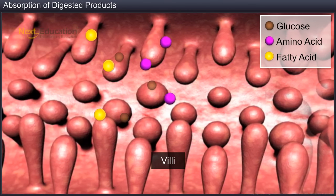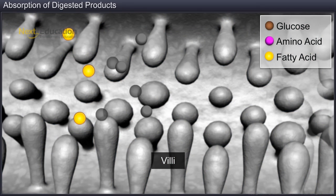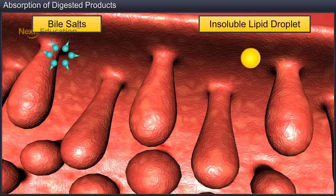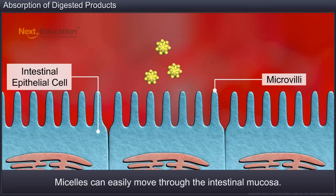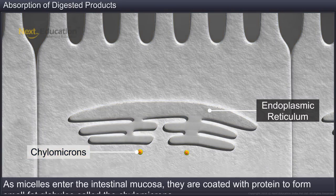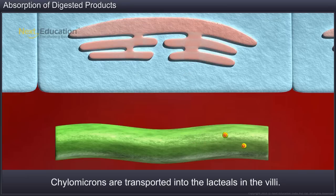Fats are not absorbed through the intestinal villi. Fatty acids and glycerol are insoluble in water and therefore cannot be absorbed by the intestinal cells directly. They are first acted upon by bile salts to form small spherical droplets called micelles, which can easily move through the intestinal mucosa. As micelles enter the intestinal mucosa, they are coated with protein to form small fat globules called chylomicrons, which are transported into the lymph vessels called lacteals in the villi. These lymph vessels ultimately release the absorbed substances into the bloodstream.